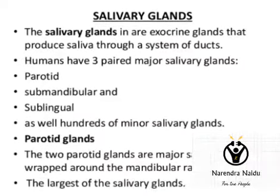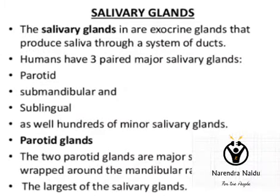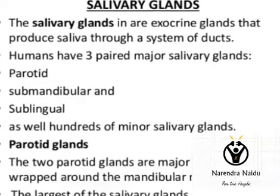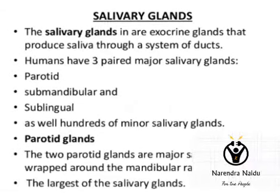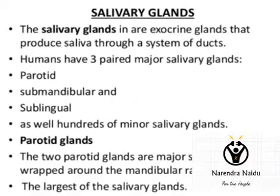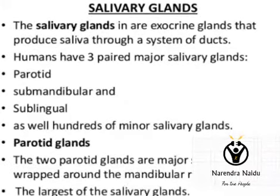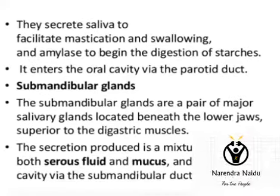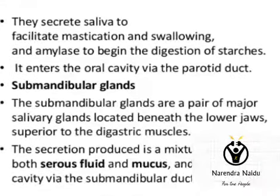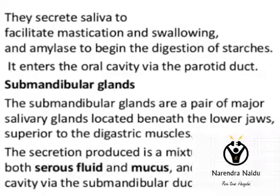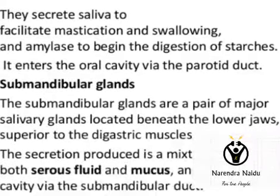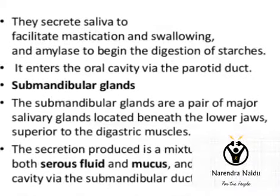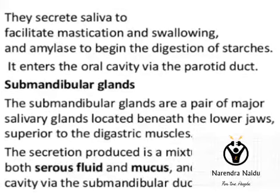These salivary glands are exocrine glands. The first ones are the parotid glands. These parotid glands are the major salivary glands and are the largest of all the salivary glands. They secrete saliva mainly for mastication and swallowing purposes, and also secrete amylase for the digestion of starch content in food material.